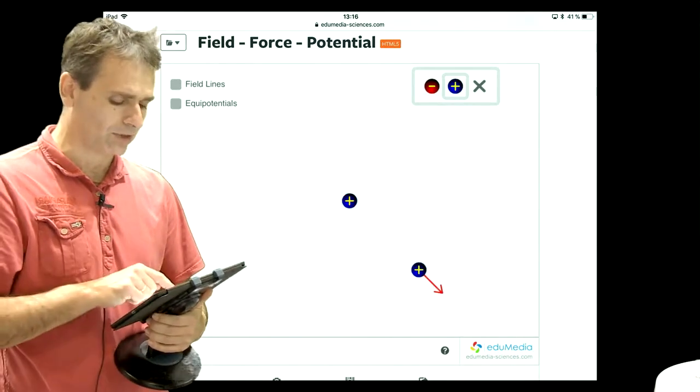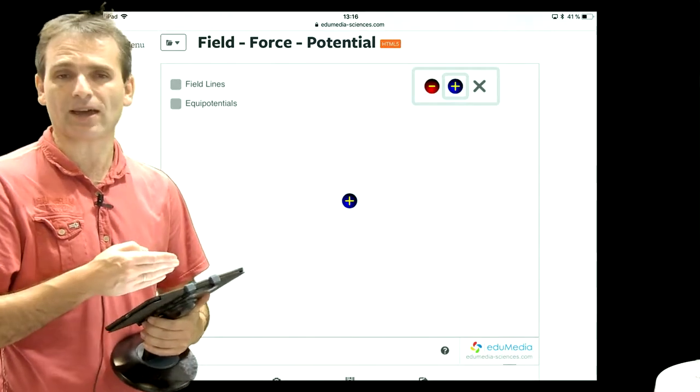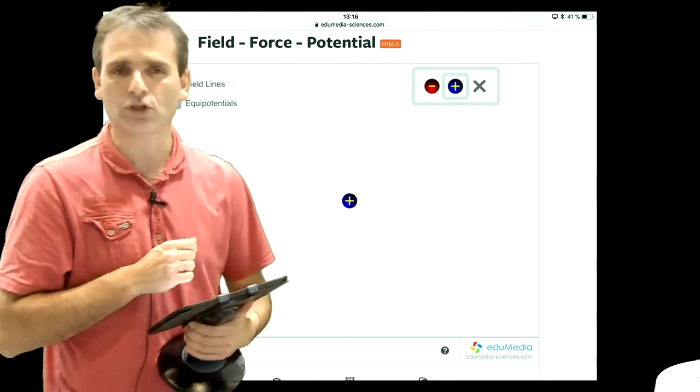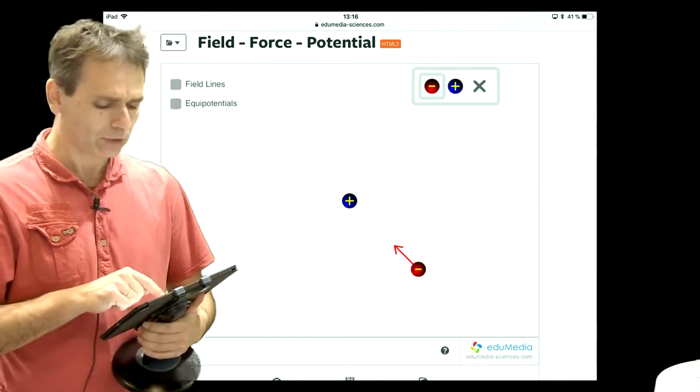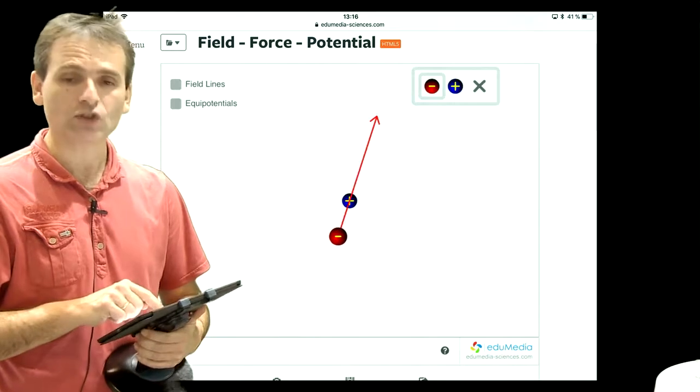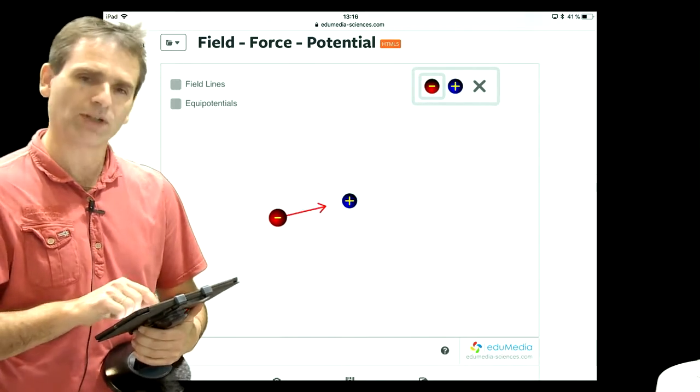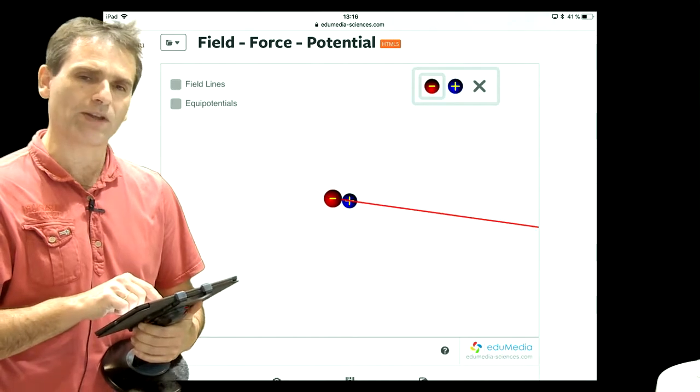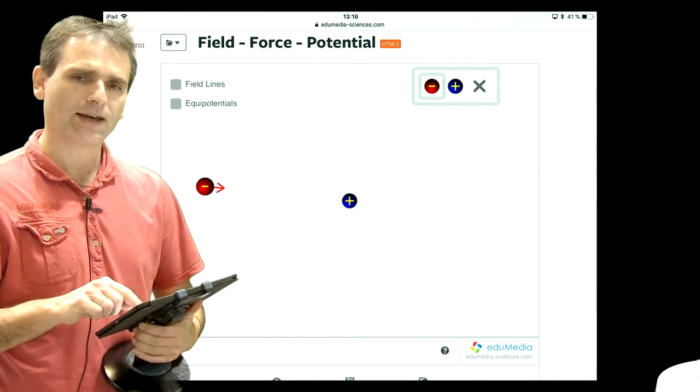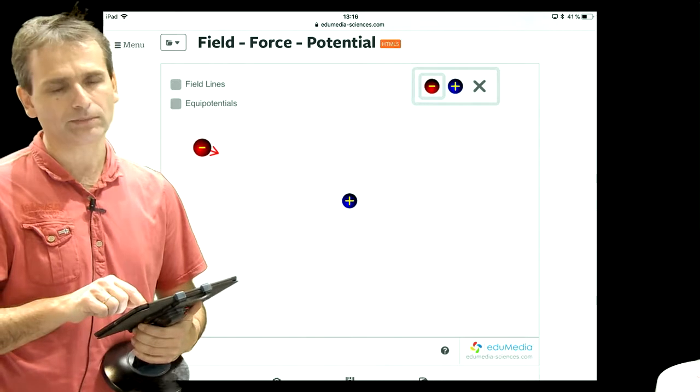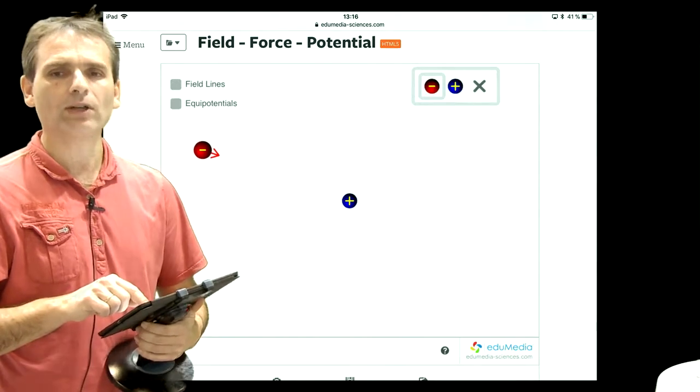I can change this with a plus charge and understand that there is a kind of repulsion now. What you have to understand is that this charge experiences a force which is higher in magnitude when it is close to the charge and lower in magnitude when you are far away.